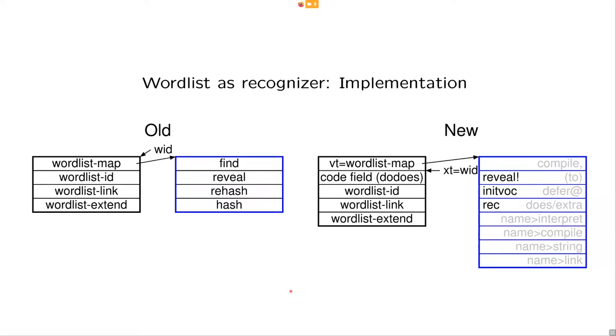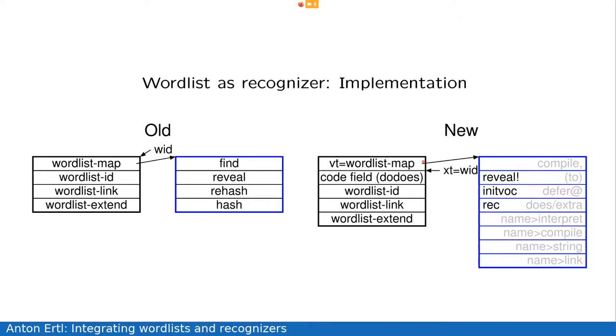So, finally, the implementation of wordlists as recognizers. They're already the old implementation. So, this is a GForth specific slide. So, already the old implementation was object oriented. So, we had this virtual method table pointer, which was called a map and had a number of methods. And we had three other fields.